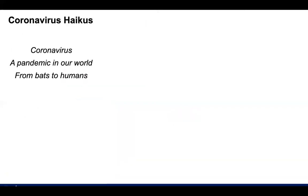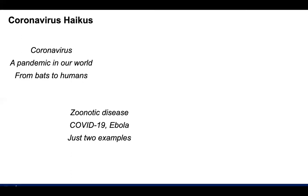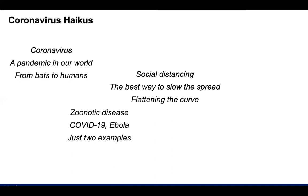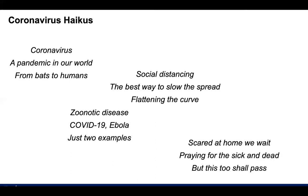A group of haikus written by one student: 'Coronavirus, a pandemic in our world, from bats to humans.' 'Zoonotic disease — COVID-19, Ebola — just two examples.' 'Social distancing, the best way to slow the spread, flattening the curve.' 'Scared at home we wait, praying for the sick and dead, but this too shall pass.' I included this one because it brings up 'scared.' I received quite a few products from students that talked about negative emotions, fear, stigmatization, and racism — conversations I might not have had with students in a class of 220.